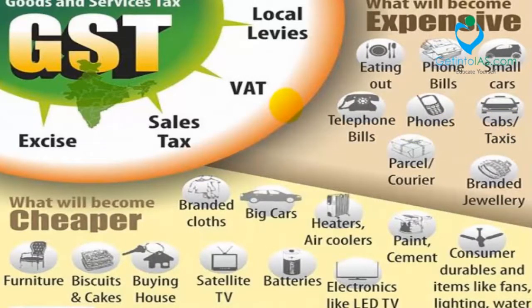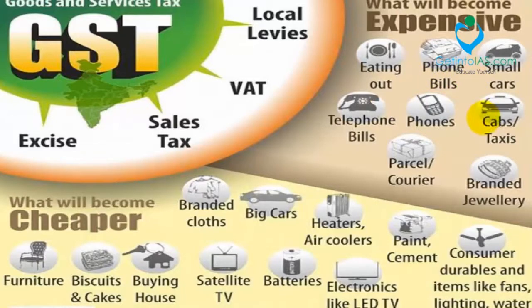There are many prices which become expensive and which become cheaper under GST. Eating out, phone bills, and small cars all become expensive. What will become cheaper includes branded clothes, big cars, heaters, air coolers, paints, and cements.